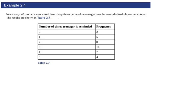This first category, a number of teenagers that didn't have to get reminded at all, there was two of them in that group, and so on for each of these. Here we have data that's already organized in a nice table.